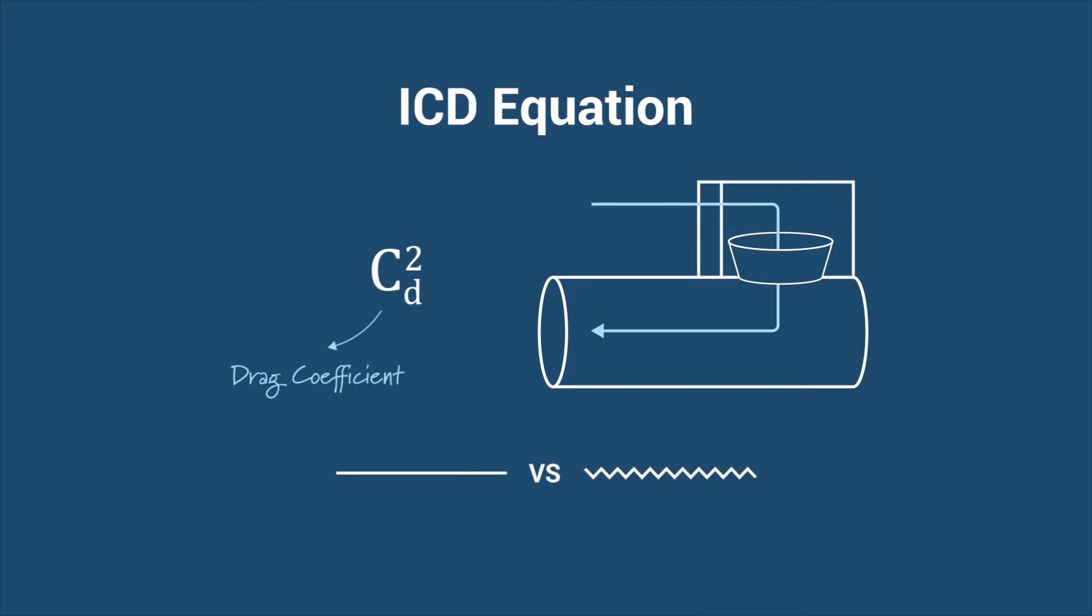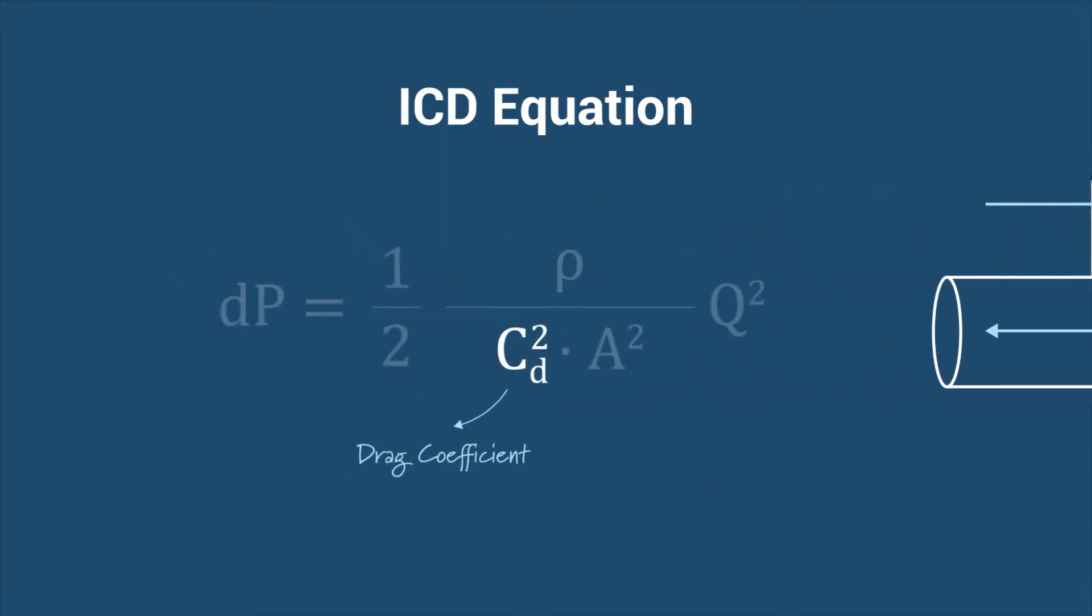If the surface of the housing and ICD were perfectly smooth, the CD value would be equal to 1. But because we are working in the real world, the CD value usually falls between 0.8 and 0.97.